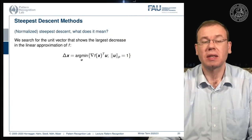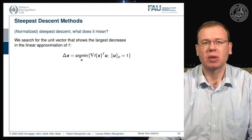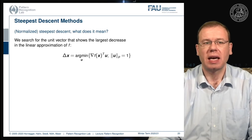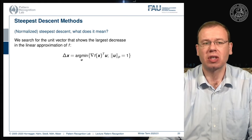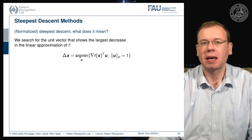With steepest descent methods, even the normalized ones, we might want to consider what update direction we actually want to choose. What we want is the largest decrease in the linear approximation of f, and technically we could constrain this gradient direction by a unit ball of an LP norm.